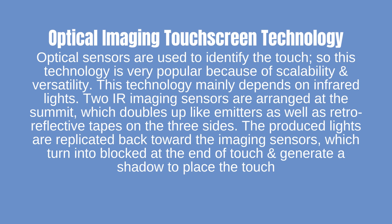Optical imaging touchscreen technology uses optical sensors to identify touch, and is popular because of scalability and versatility. This technology mainly depends on infrared lights. Two IR imaging sensors are arranged at the summit, doubling as emitters, along with retro-reflective tapes on three sides. The produced lights are reflected back toward the imaging sensors, which become blocked at the point of touch and generate a shadow to locate the touch.